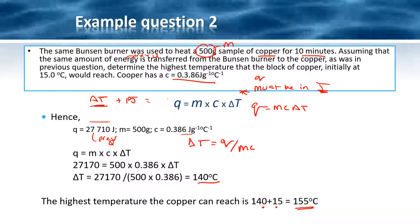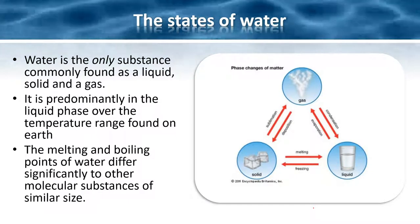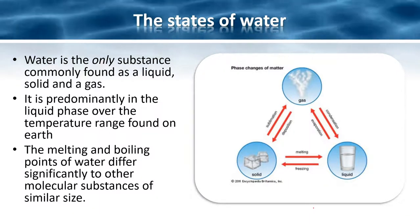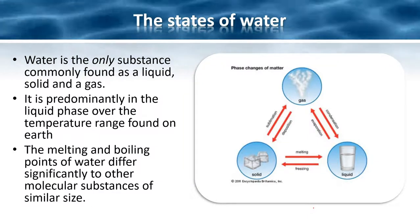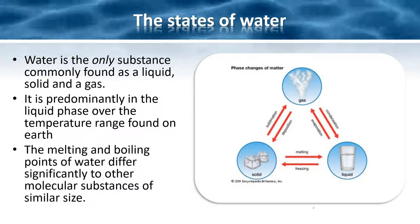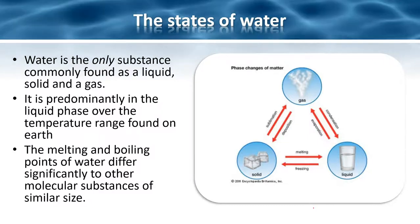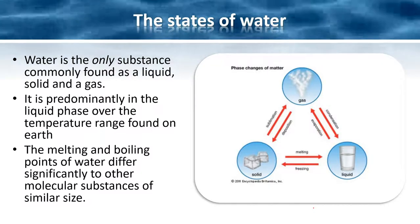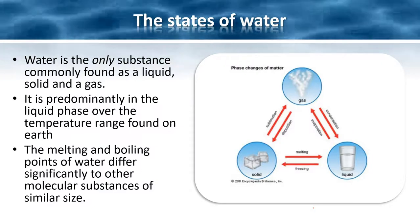That's how we calculate heat energy using the property of specific heat capacity, which is intrinsic to each substance. The high heat capacity of water is one of the reasons that we see it present in all three states on our planet, which is one of the only substances found as a liquid, solid and gas. It's predominantly in the liquid phase over the temperature range found on earth.